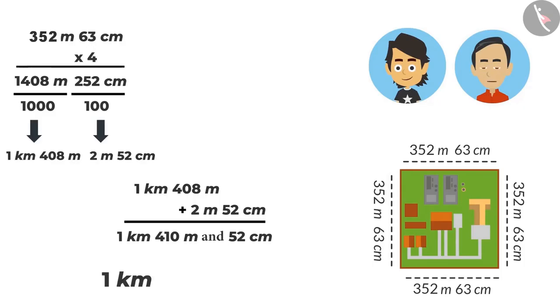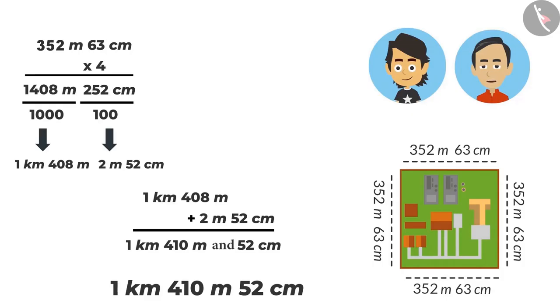This would be the correct way of writing it. 1 kilometre, 410 metres, 52 centimetres. Which means 1 kilometre and 410 metres and 52 centimetres. Now I understand completely.